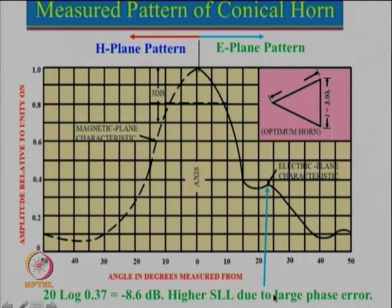If we reduce the phase error one can improve the performance, and that is why I do not recommend a phase error of 135 degrees — you should take a phase error even less than 45 degrees. In fact, I am going to show you some examples from the literature where people have taken a much smaller phase error, even of the order of 10 to 15 degrees.